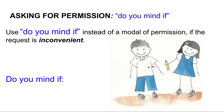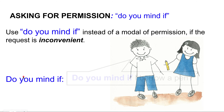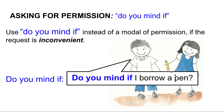Another example: this boy doesn't have a pencil and this girl has only one pencil, so the request is inconvenient. He might ask 'do you mind if I borrow a pen or pencil?' 'Mind' means something similar to 'do you hate it if I borrow' — it's like asking 'does it bother you?'